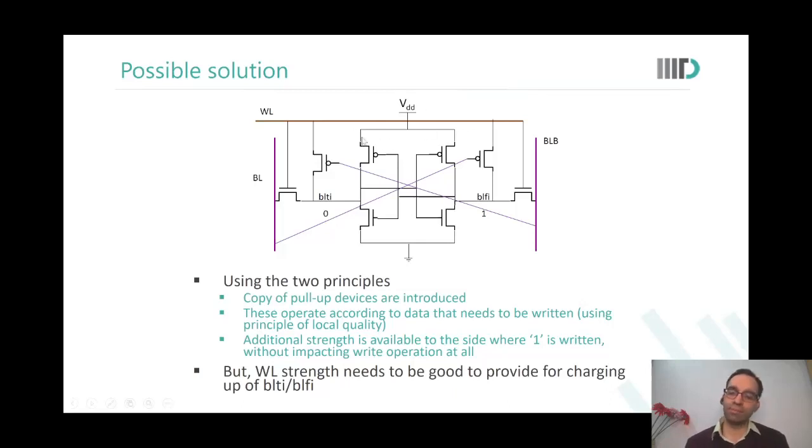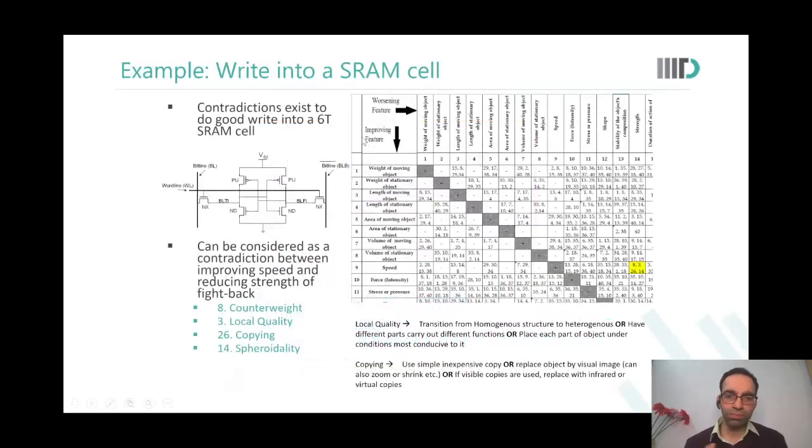So I do not want to bore you down with the details of what is happening here but this is again just another example of even if it is a core technical problem that you are facing, all that you need to do is identify what parameters are in conflict with each other are contradicting each other, put them in the contradiction matrix and you will get directions in which you should brainstorm.